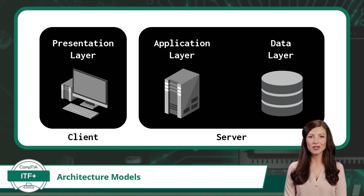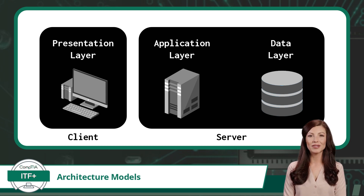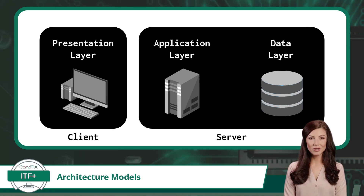For the two-tier architecture, picture a fast-food restaurant with a cashier at the counter and a kitchen in the back. The cashier takes your order and communicates directly with the kitchen to prepare your food. This parallels our two-tier architecture: the client handling the presentation layer is our cashier, and the server handling the application layer and data layer is our kitchen. While this model is an improvement over the one-tier architecture, it can still become challenging to maintain as the application grows.